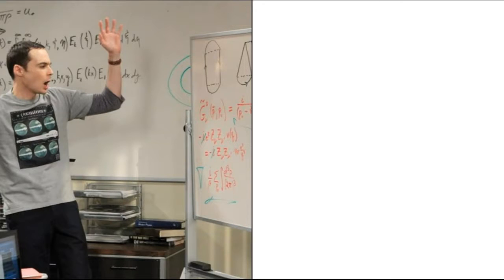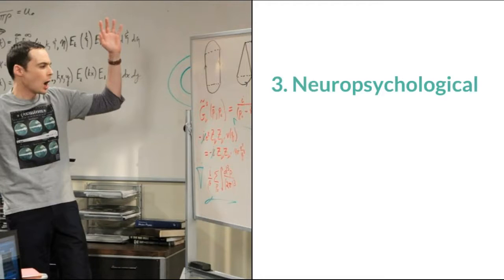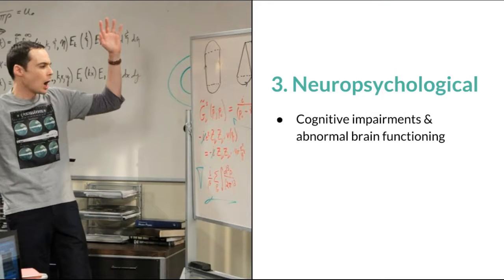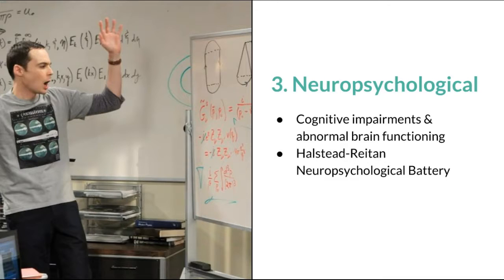The third type of psychological test is neuropsychological testing. The purpose of these tests is to detect cognitive impairments or abnormal functioning involving language, memory, perception, and learning abilities, for example. One instrument is the Halstead-Reitan Neuropsychological Battery, which is widely used to evaluate the presence of brain damage.